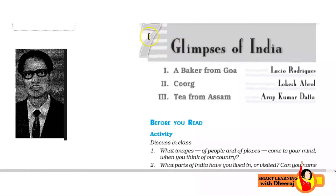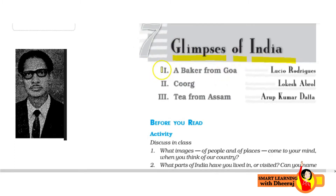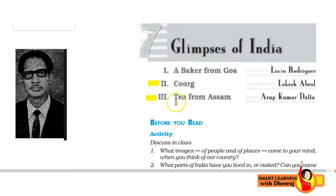Hi students, today we are going to study class 10th chapter number 7, which is called 'The Glimpses of India.' This is a very interesting chapter. There are three parts of this chapter, and in these three parts of India, our country, we will get a different light to see each other.